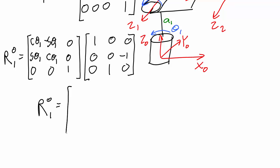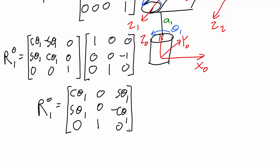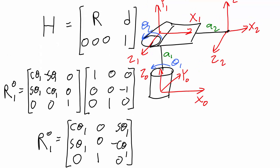To find the complete rotation matrix from frame 0 to frame 1, I'll multiply these matrices together. Now I have the complete rotation matrix from frame 0 to frame 1.